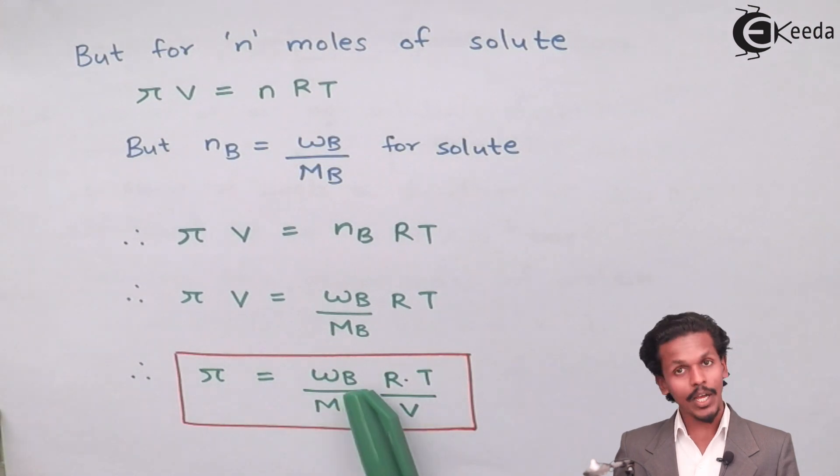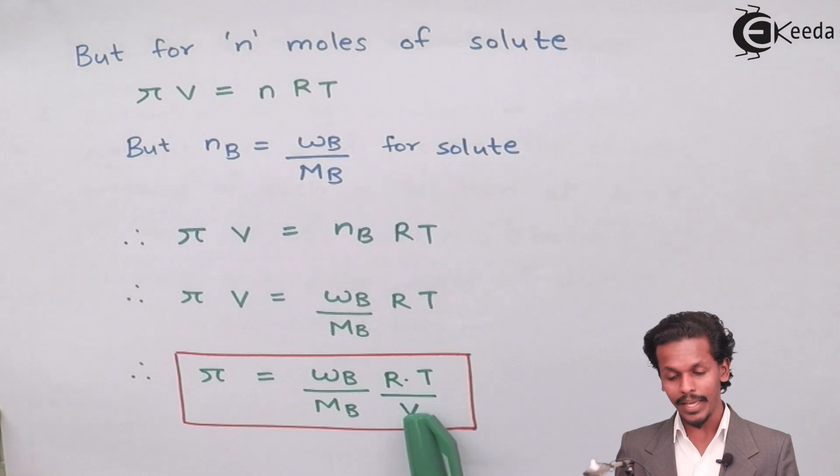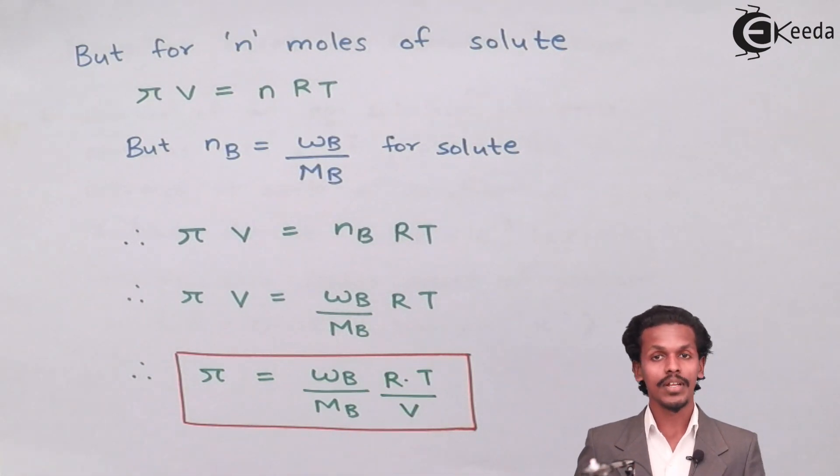Therefore, the osmotic pressure will be π equals WB divided by MB times RT divided by V.